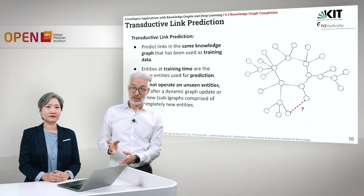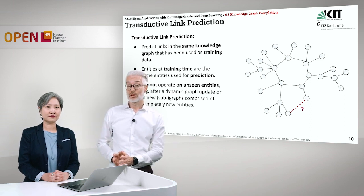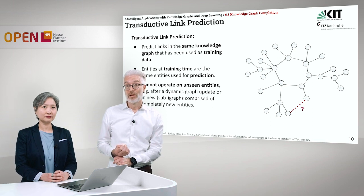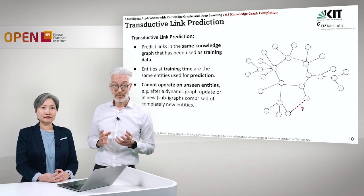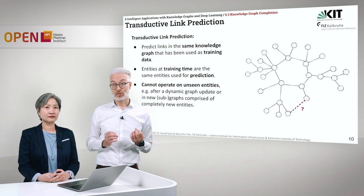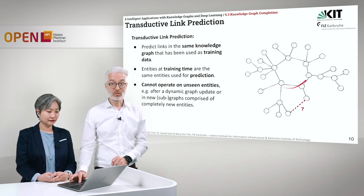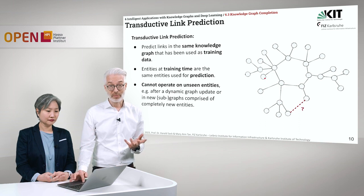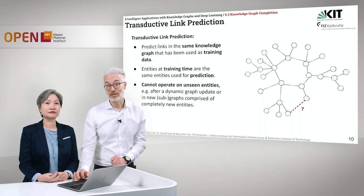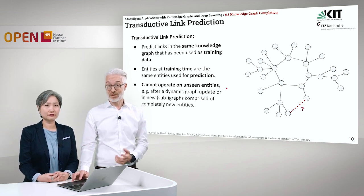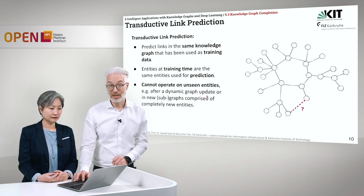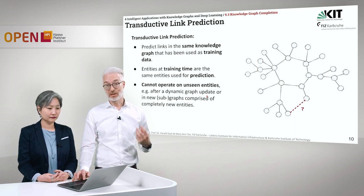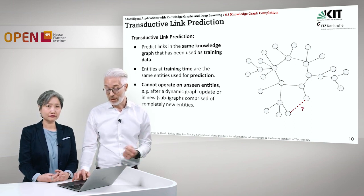We have to distinguish two different link prediction tasks of different difficulty. First, transductive link prediction: we predict links in the same knowledge graph that was used for training. We have a knowledge graph used in training, and we want to predict a link between nodes that have already been learned. Entities at training time are exactly the same as used for prediction time, which means this cannot, or can only rather badly, operate on unseen graphs. After a dynamic graph update or a new subgraph comprised of completely new entities, the model has to be retrained.